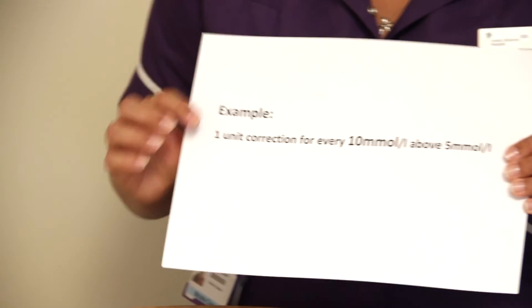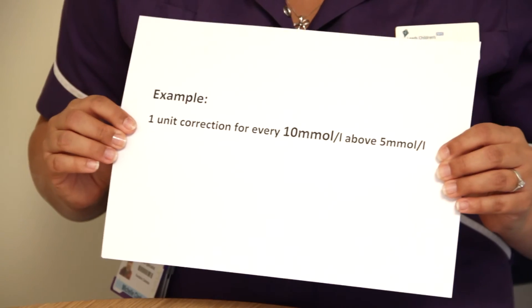We usually give a correction dose with fast acting insulin, which in most cases is Nova Rapid. Everyone's correction dose may vary, but for this example, 1 unit of Nova Rapid reduces your blood glucose by 10 millimoles per litre above 5 millimoles per litre.